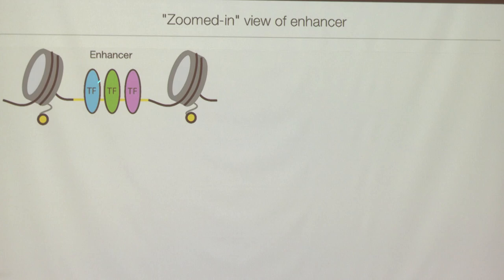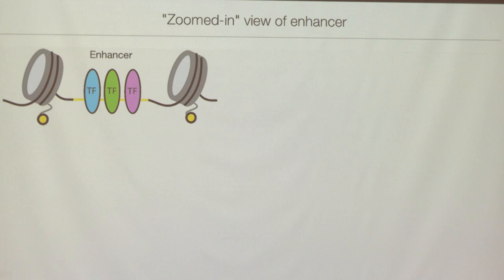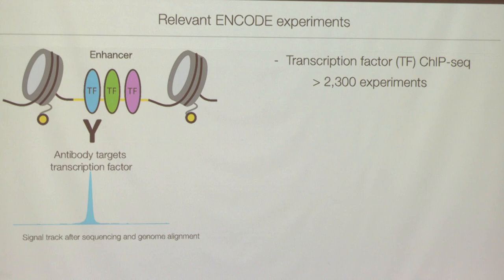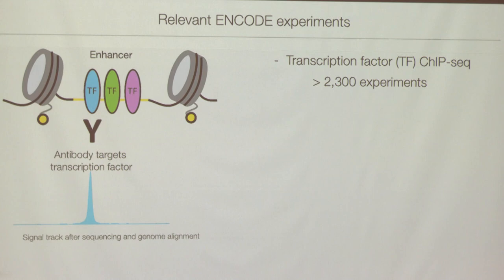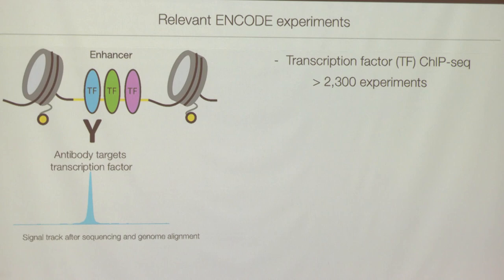You can assay this kind of data in specific cell types using biotechnology involving immunoprecipitation — using Y-shaped antibody molecules that recognize transcription factors bound to enhancers. The ENCODE consortium has generated chromatin immunoprecipitation followed by deep sequencing — ChIP-seq data — for thousands of experiments. In total, ENCODE has generated close to 15,000 genome-wide data sets, 90% in humans and roughly 10% in mouse.